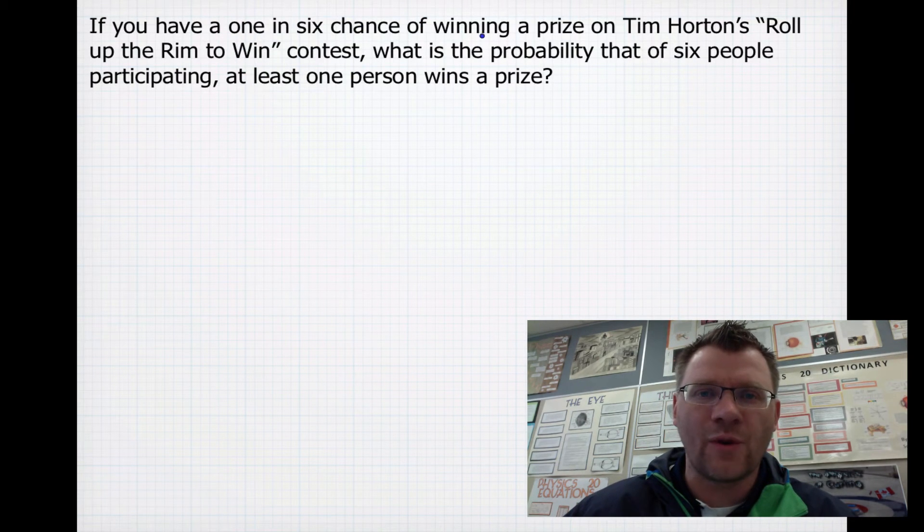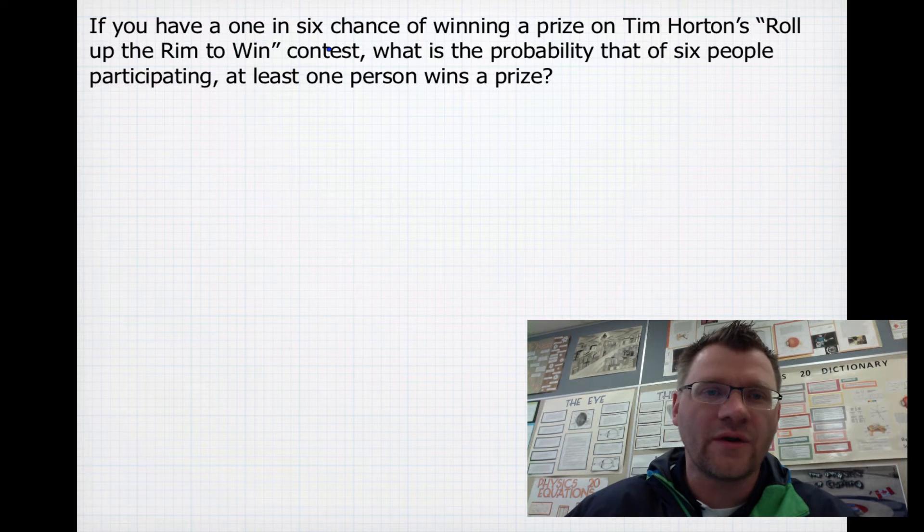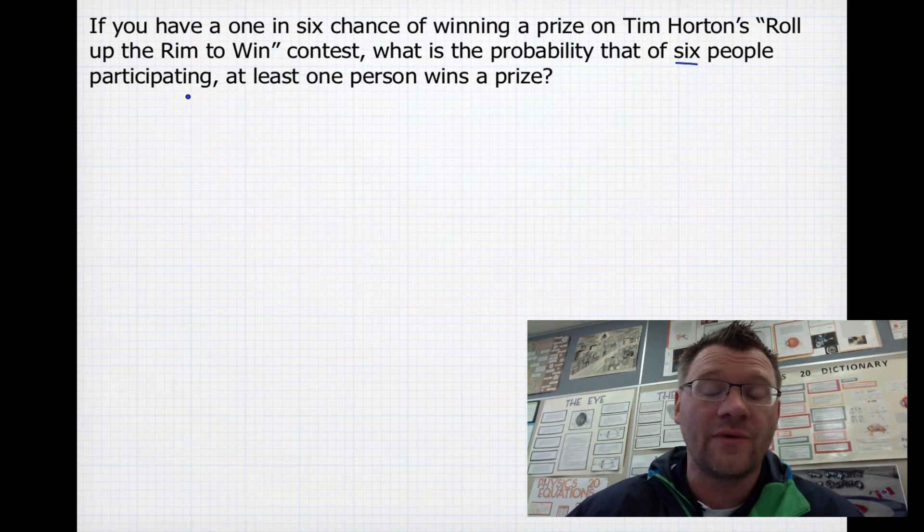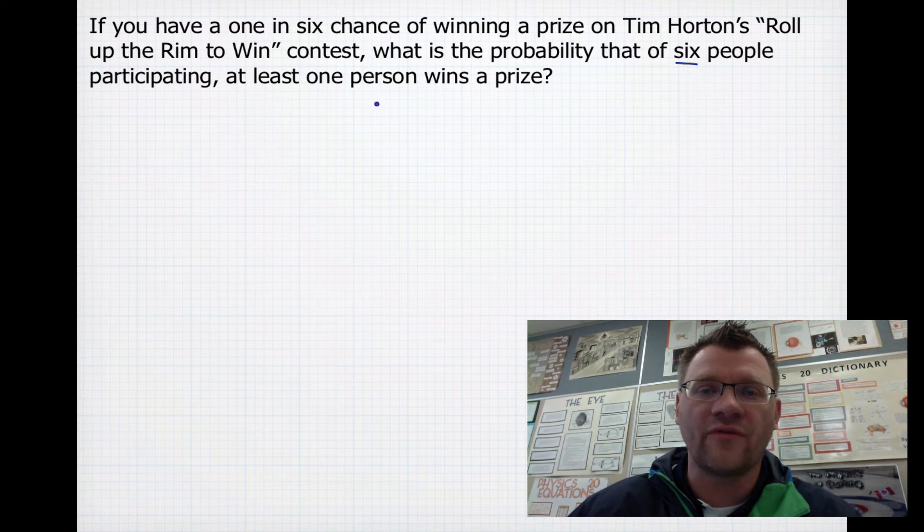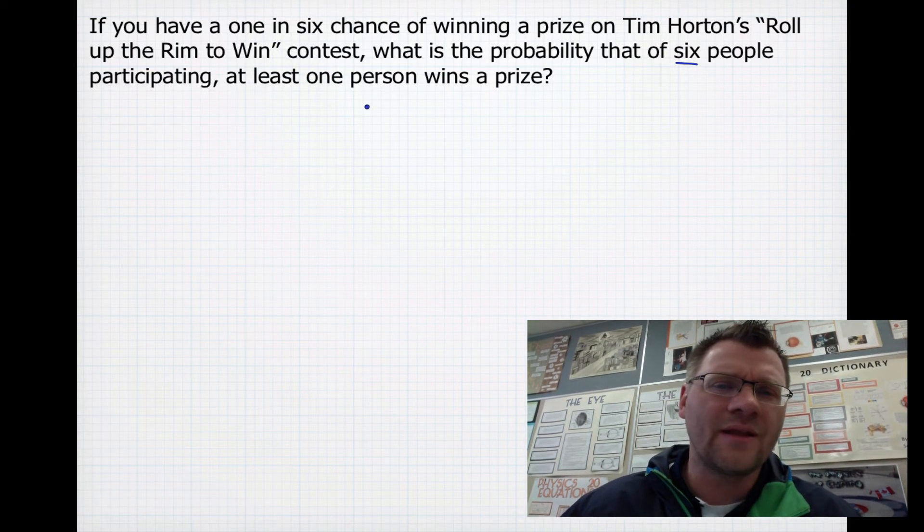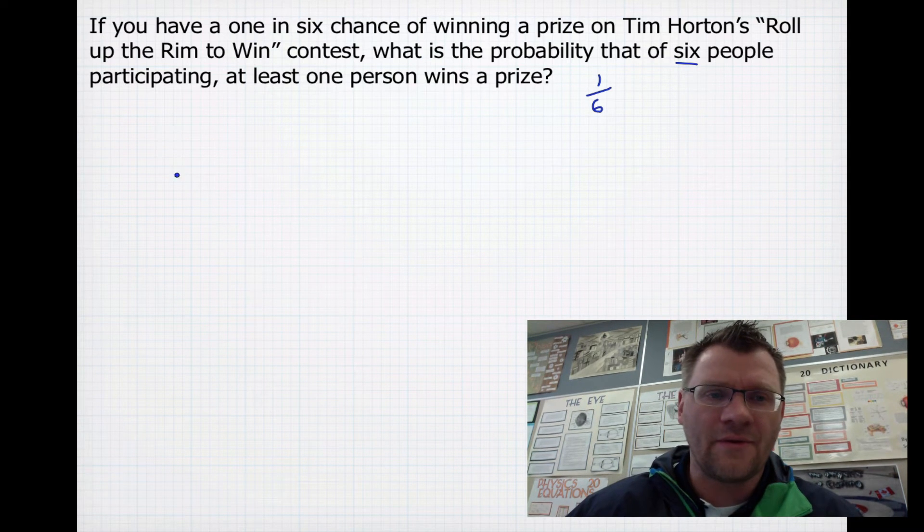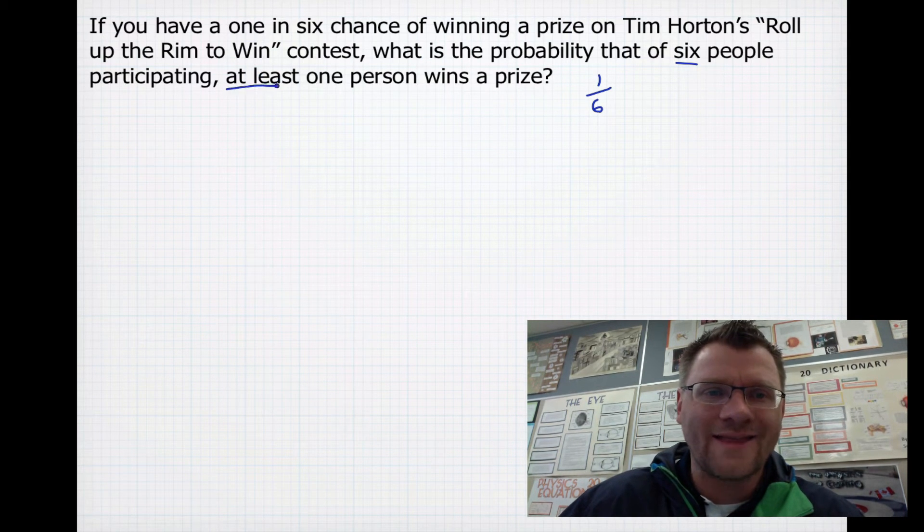So if you have a 1 in 6 chance of winning a prize on Tim Horton's Roll Up the Rim to Win contest, what is the probability that of 6 people participating, so 6 people in a room drinking that coffee, at least 1 person will win a prize? So automatically, you might think that that's just going to be a 1 in 6 chance, but it's actually a lot better than that because of this at least one person.